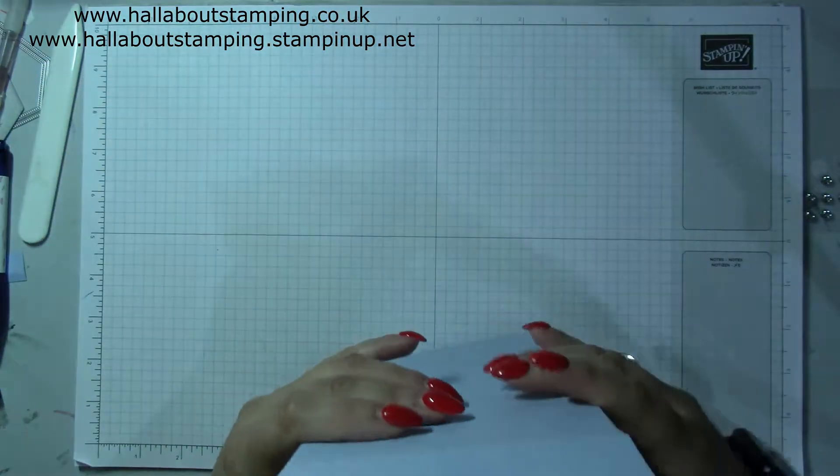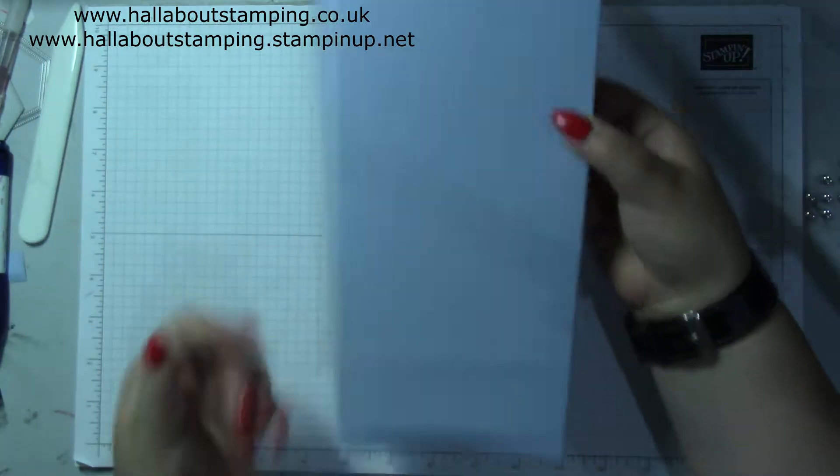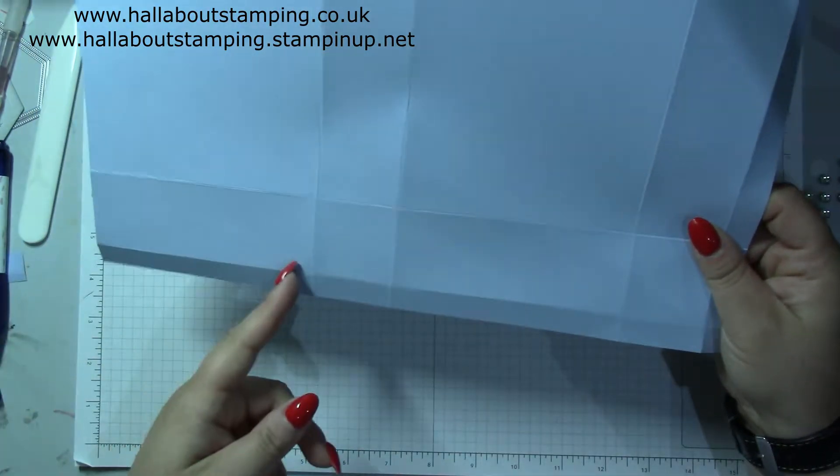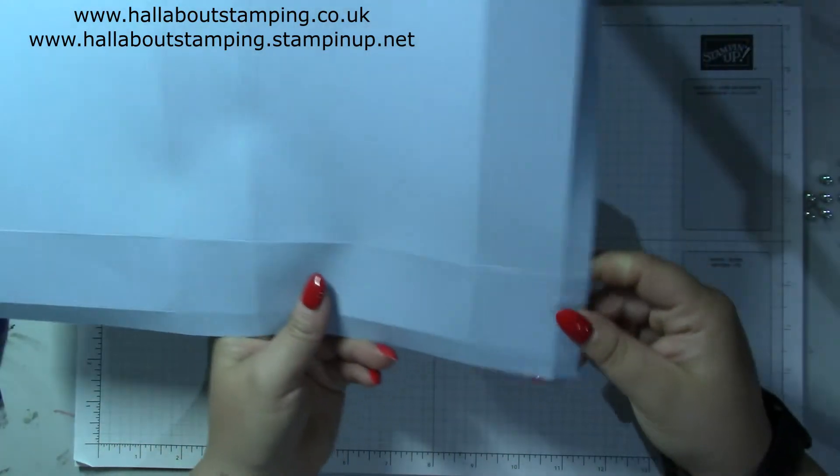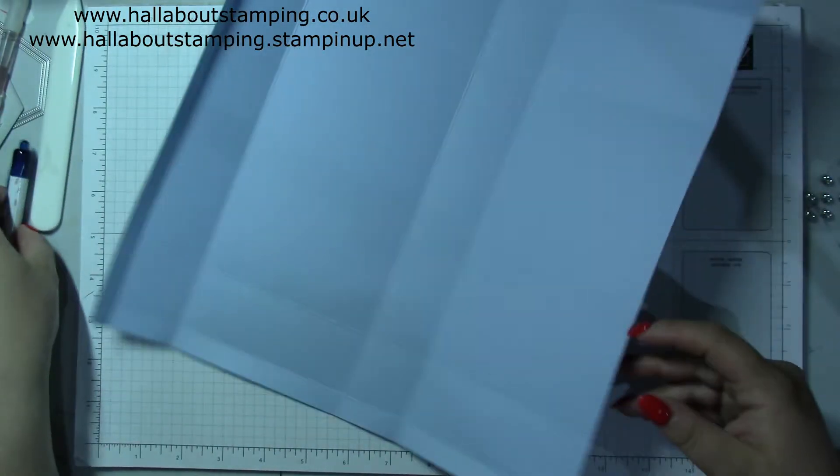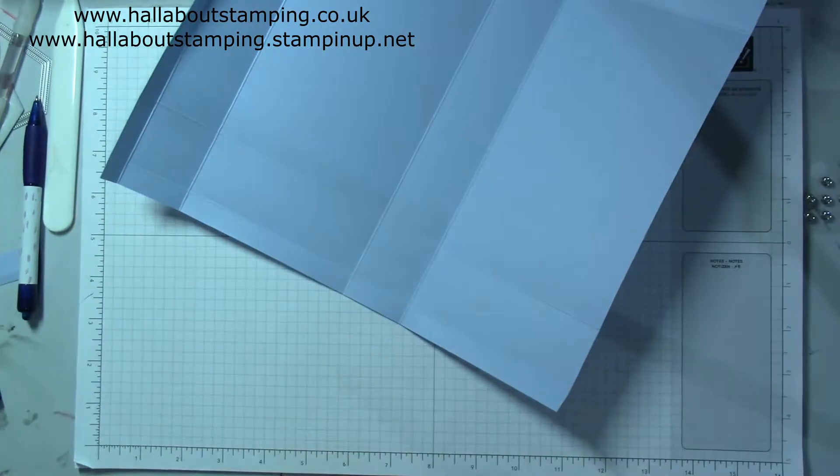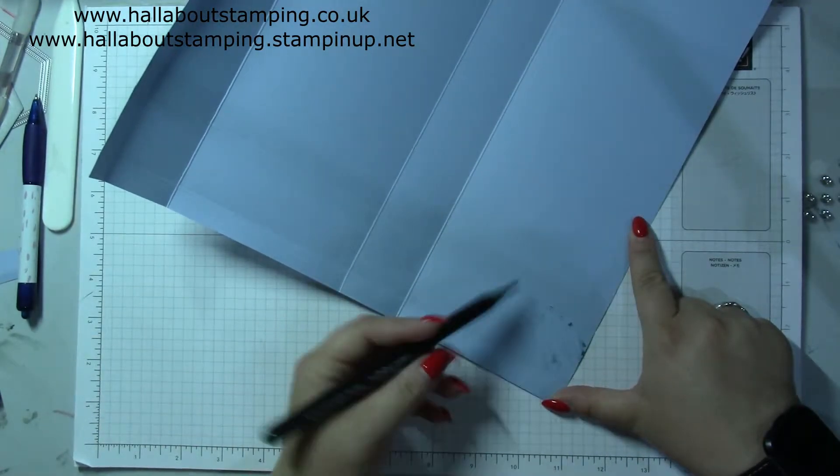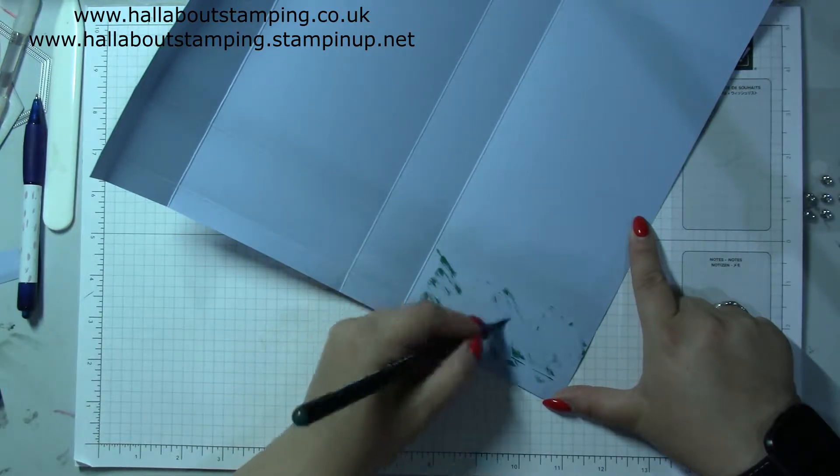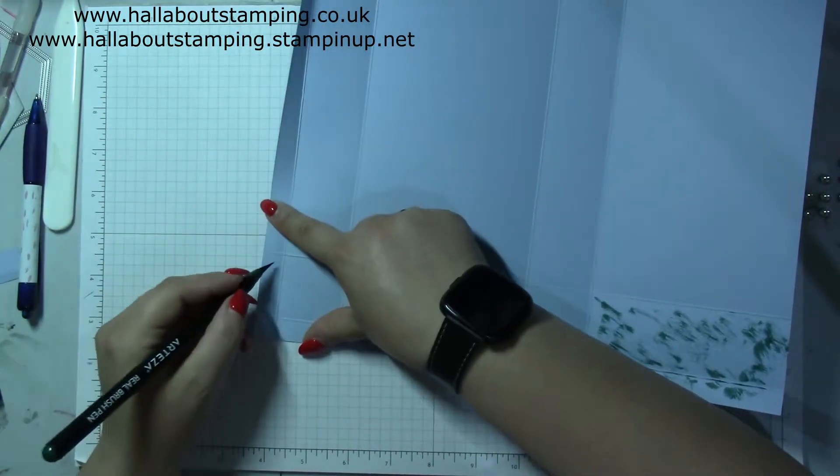So fold your box around and the one that's going to be your front is going to be the flap. So you want to keep, sorry the one that is furthest away from that tab. So if I flip it over I can mark what you're getting rid of. So you're getting rid of that there and then that little tab over here.